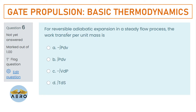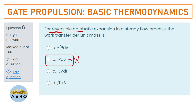For a reversible adiabatic expansion in a steady flow process, the work transfer per unit mass — remember, they have asked work done in terms of a reversible process, so the formula is W = ∫P dV. The right option is option B.